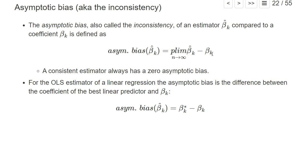If you have a consistent estimator, the asymptotic bias is always zero because our estimator converges in probability to the true beta_k. For an OLS estimator, under weak assumptions, we know it converges to the coefficients of the best linear predictor, so the asymptotic bias is the difference of that best linear predictor minus beta_k. If beta_k is defined as the best linear predictor, we have zero asymptotic bias; if it represents a causal effect, we may have a positive or negative asymptotic bias.